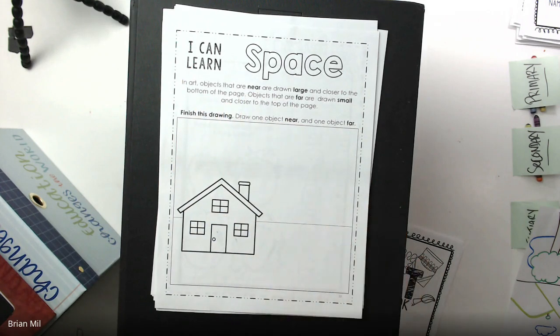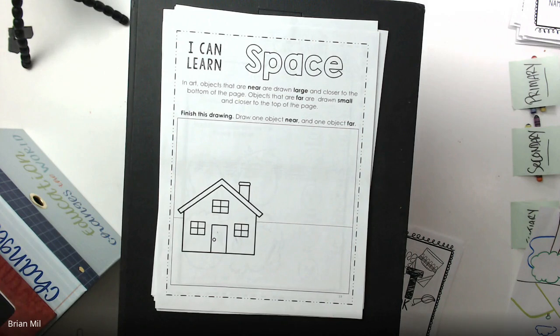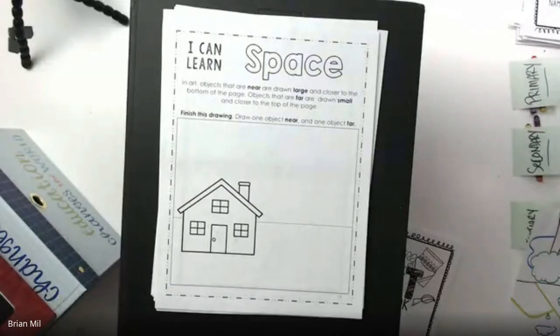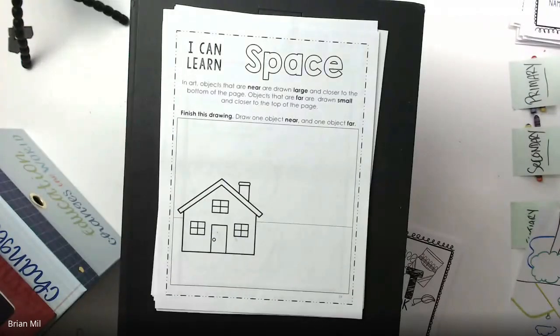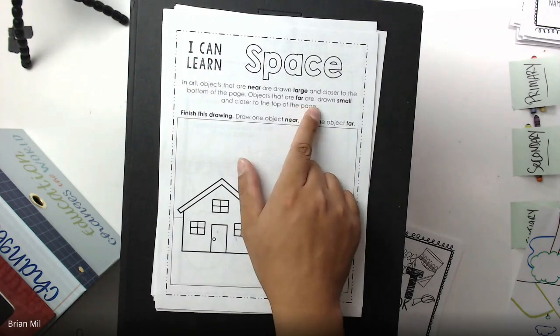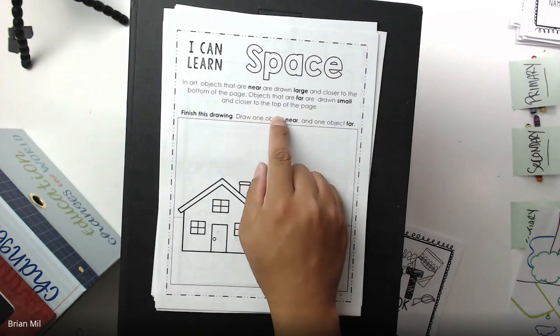All right, next question. If I were to draw something really far away, what size should it be? If I were to draw something really far away, what size should the object be? Anyone know? I'm going to pick Brian. Medium. Okay, it could be medium to small. Good job. That was a very tricky question. All right, just to add to Brian's answer, if it has to be far, it has to be small and closer to the top of the page.